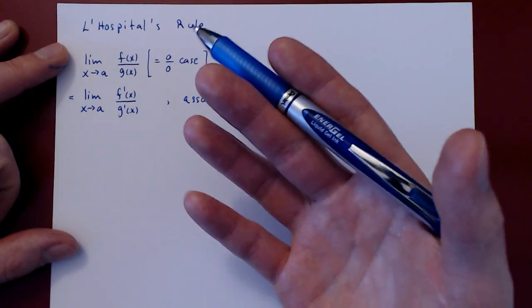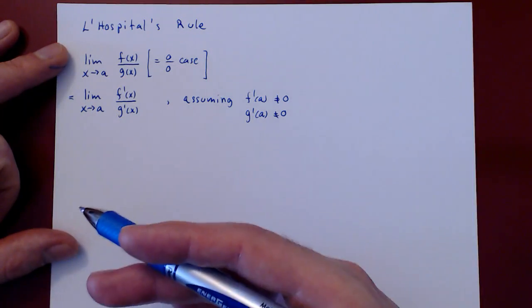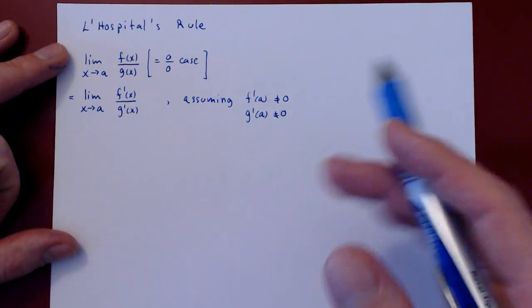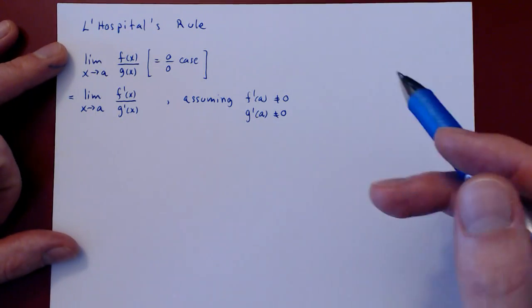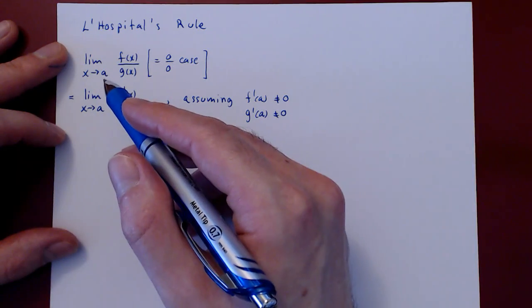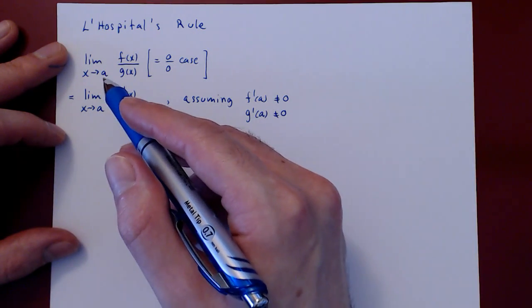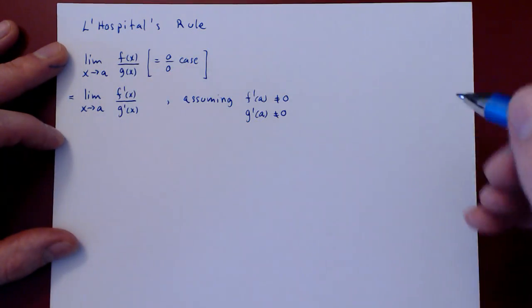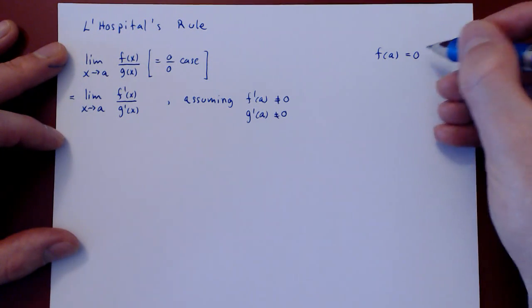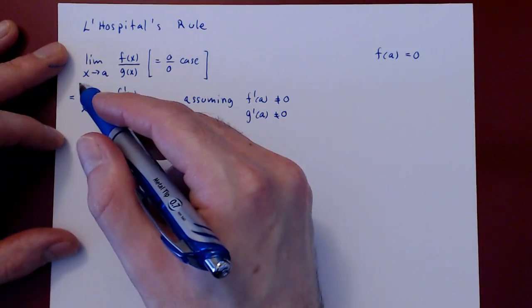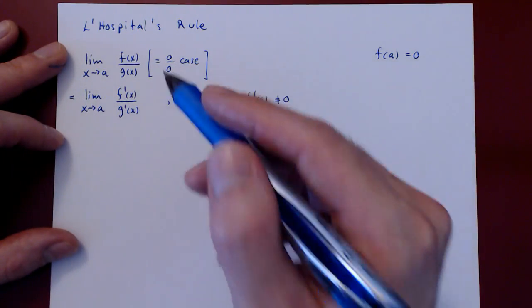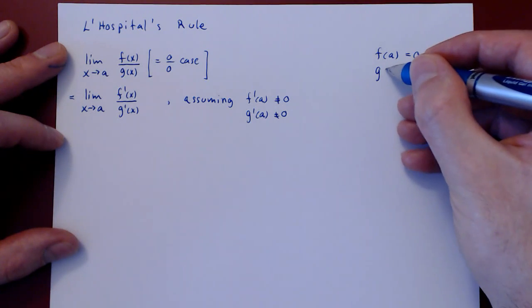As we talked about in the previous video, fundamentally we want to use linear approximation. Since as x approaches a, f of x approaches 0, this implies f of a equals 0. Similarly, as x approaches a, g of x approaches g of a, which is also 0, so g of a is also 0.